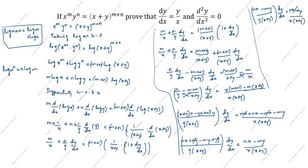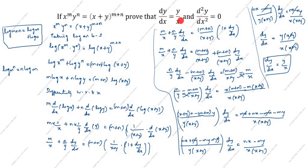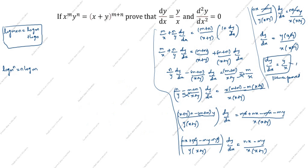The n x minus m y terms cancel on both sides. Next step: dy by dx equals y times x plus y divided by x times x plus y. The x plus y terms cancel, giving dy by dx equals y by x. This is the first result, hence proved. Next, we will prove d square y by dx square equals 0. We take dy by dx equals y by x as equation 1.